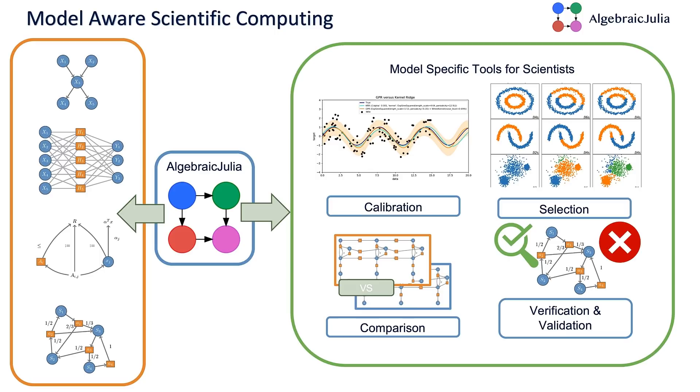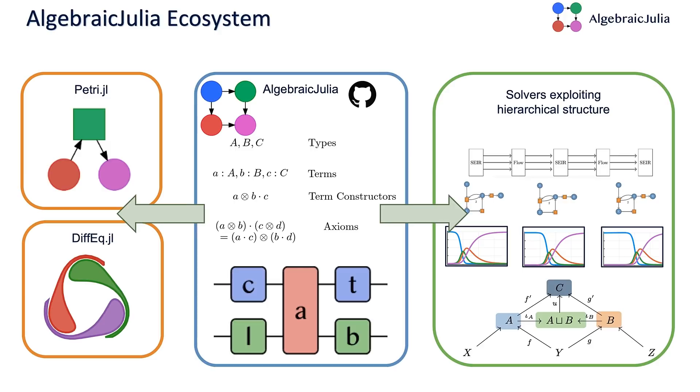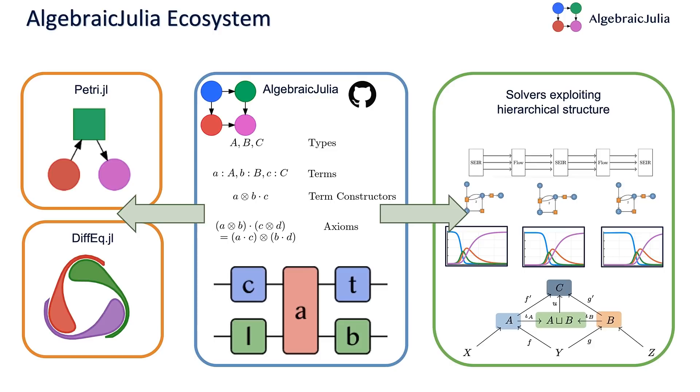Generalized algebraic theories encode scientific knowledge about how the systems work. We connect to things like Petri.jl, DiffEq.jl to do the solving. We also connect up to solvers that can exploit hierarchical structure. That's another area we're working on in future work. Right now, we can specify models hierarchically and do model generation, but we also want to solve them hierarchically. We think that we can get acceleration out of that.